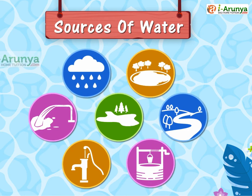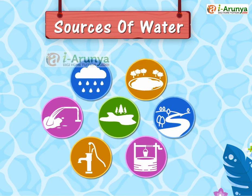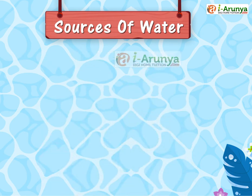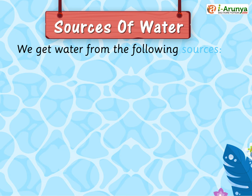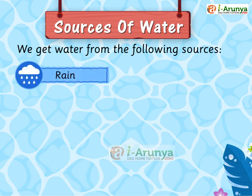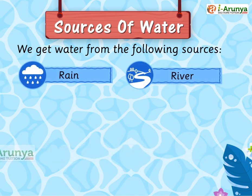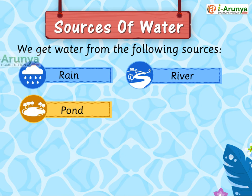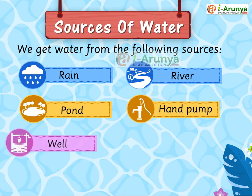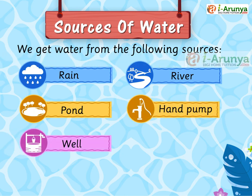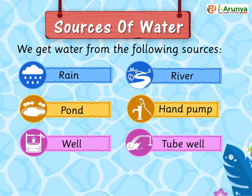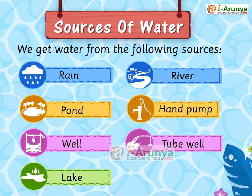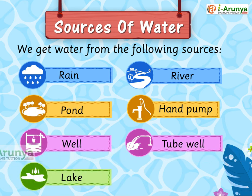We are going to learn about the sources of water. We get water from the following sources: rain, river, pond, hand pump, well, tube well, and lake. These are the sources of water.